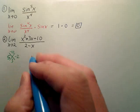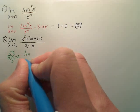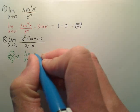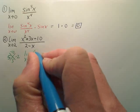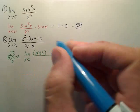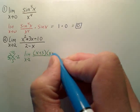2, okay, which would be the limit as x approaches 2 of x plus 5 times x minus 2.